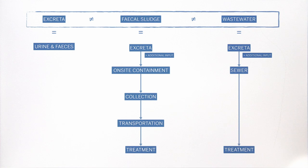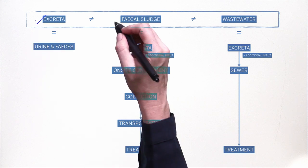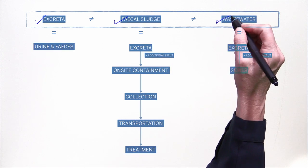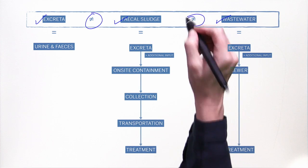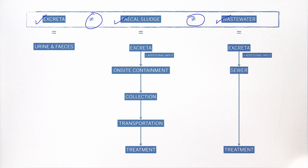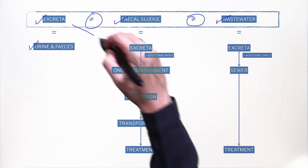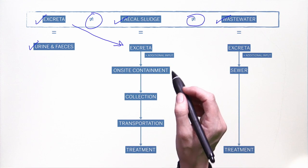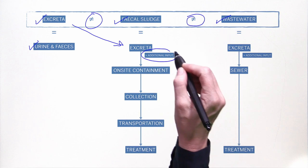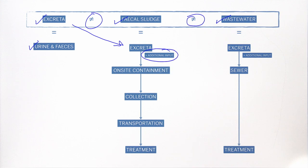To better understand what fecal sludge is, it is helpful to walk through three definitions: excreta, fecal sludge, and wastewater, and what's different about them. Excreta is urine and feces. This is different than fecal sludge, which contains excreta but in addition includes anything else that goes into the onsite containment technology.